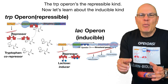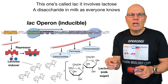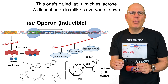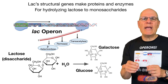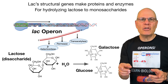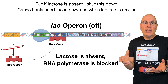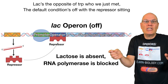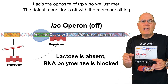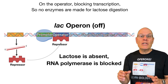The tryptophan operon is the repressible kind. Now let's learn about the inducible kind. This one's called lac — it involves lactose, a disaccharide in milk, as everyone knows. The lac structural genes make proteins and enzymes for hydrolyzing lactose to monosaccharides. But if lactose is absent, I shut this down, because I only need these enzymes when lactose is around. The lac operon is the opposite of trp: the default condition is the repressor sitting on the operator, blocking transcription so no enzymes are made for lactose digestion.